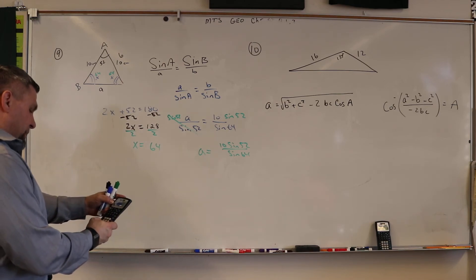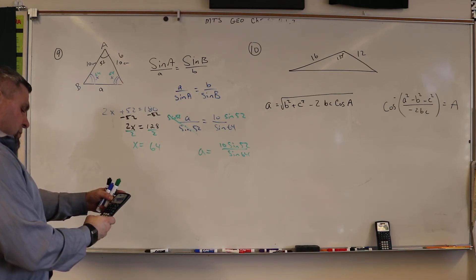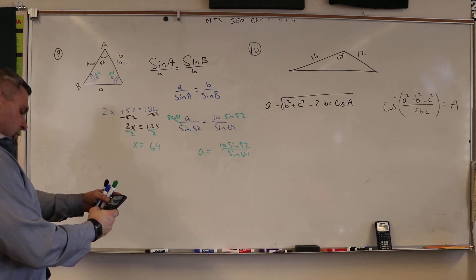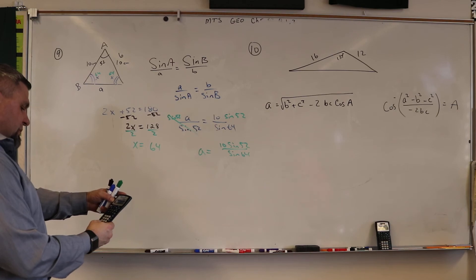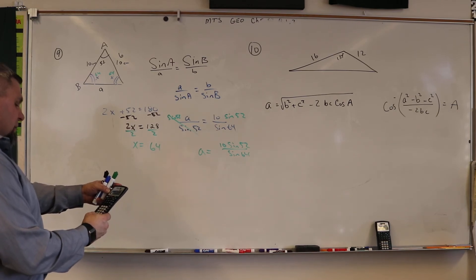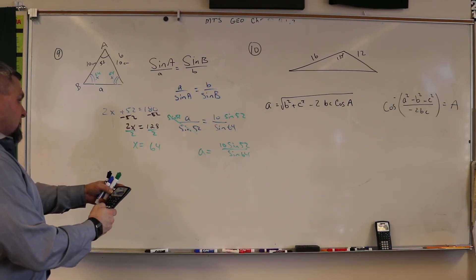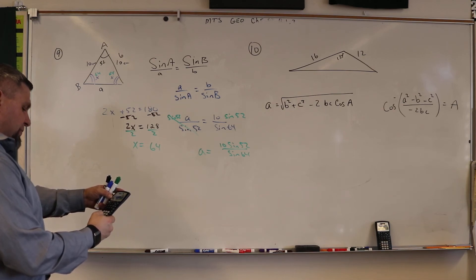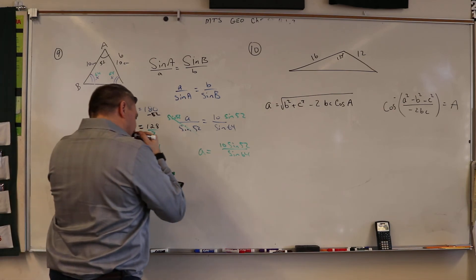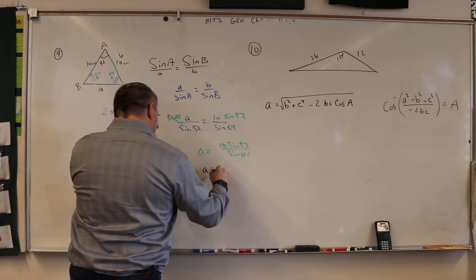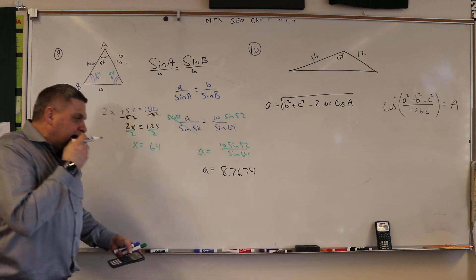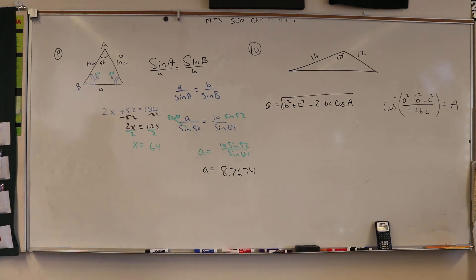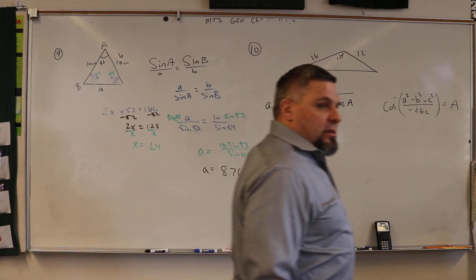And then you throw that in your calculator: 10 sine 52 divided by sine 54 equals... and we get 8.7674. Okay, and that'll be problem number nine.